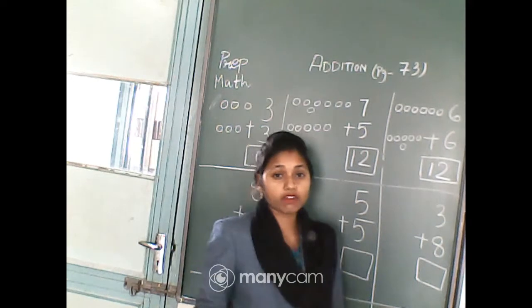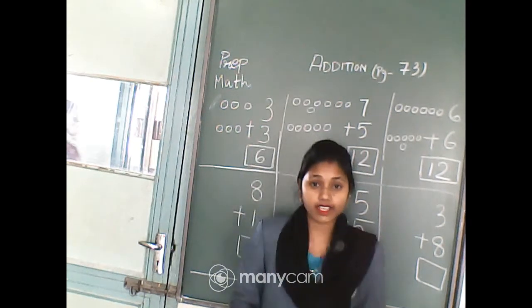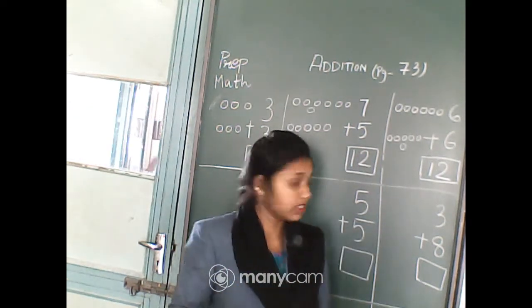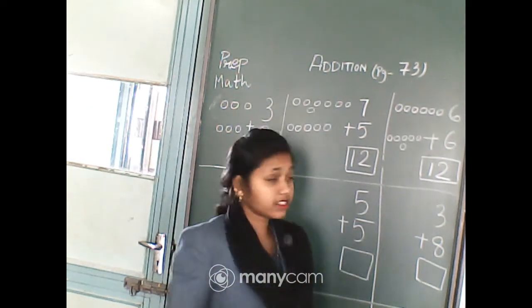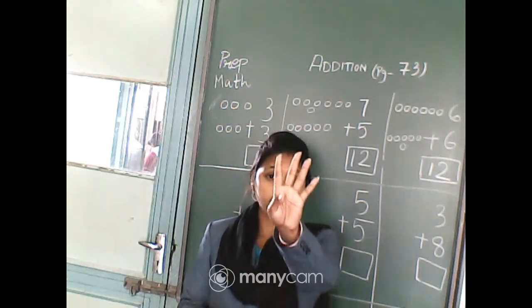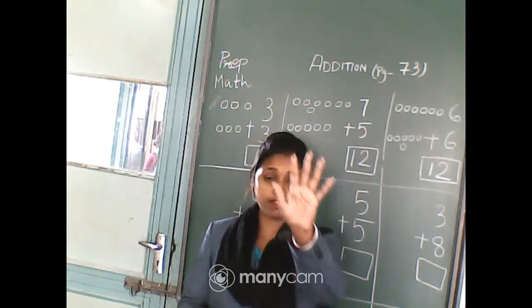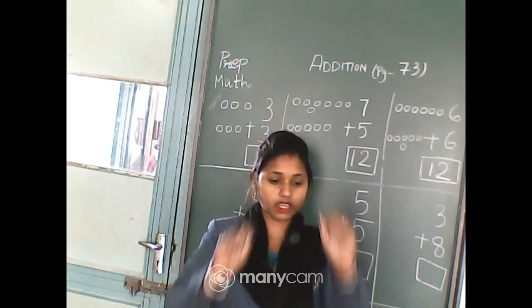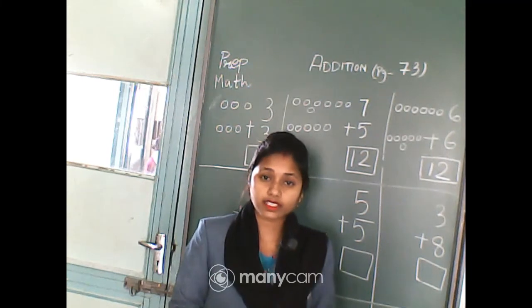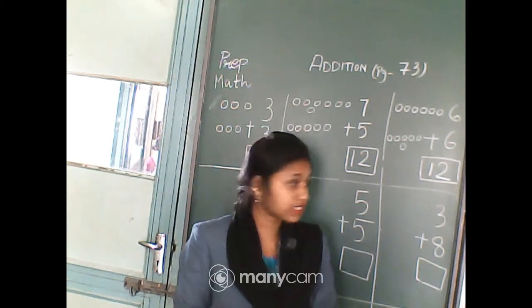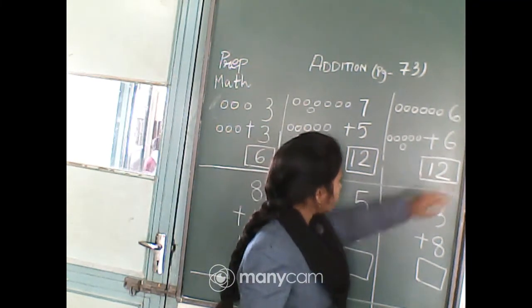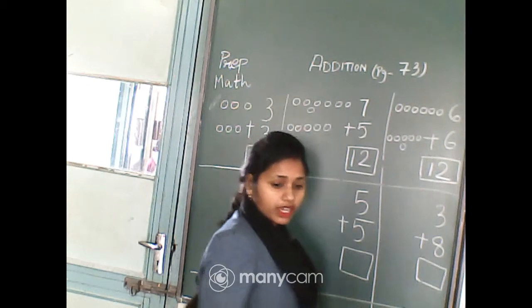So we will count after 6 using 6 fingers: 6, 7, 8, 9, 10, 11, 12. So if we count 6 after 6 — 6 plus 6 — we get 12.